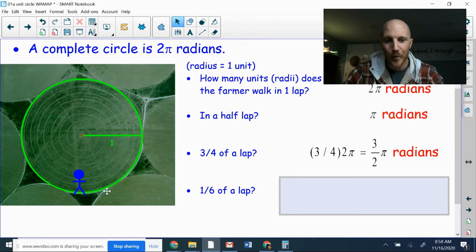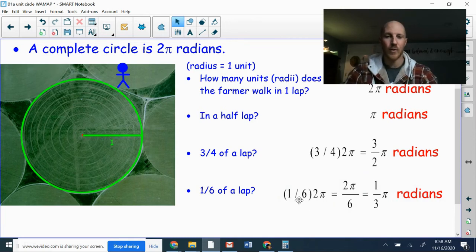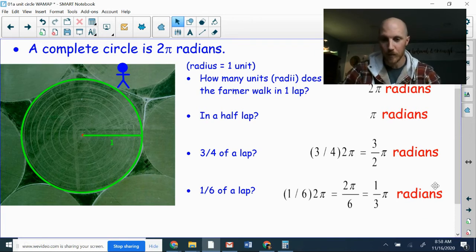One last one. What if we only went one sixth of a lap? So let's take our farmer back. If you go from here, that's about a sixth of the way around. How many radians is that? Well, one sixth multiplied by 2π. That's our circumference. It's going to give us 2π/6. Reduce the fractions. We get π/3, or you could say π divided by 3 would be the same thing.